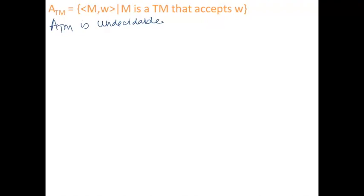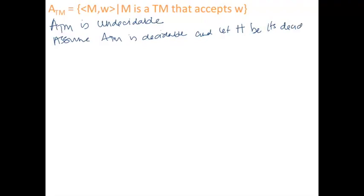Our proof says: assume ATM is decidable, and let H be its decider. So H is a TM that can decide ATM. H is going to accept if M accepts W, and it's going to reject if M does not accept W. Now, what happens if we construct a new Turing machine D that uses H as a subroutine?